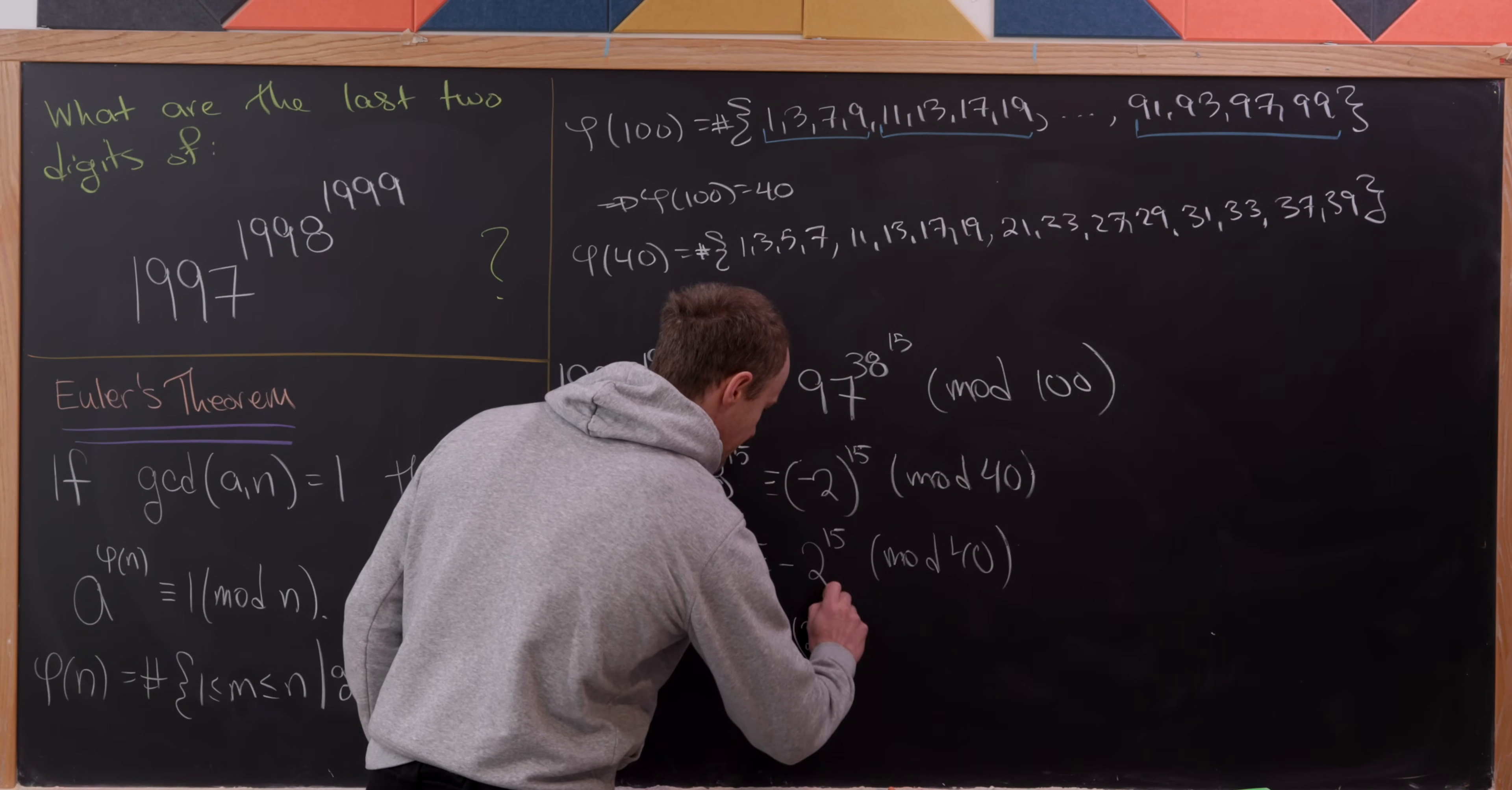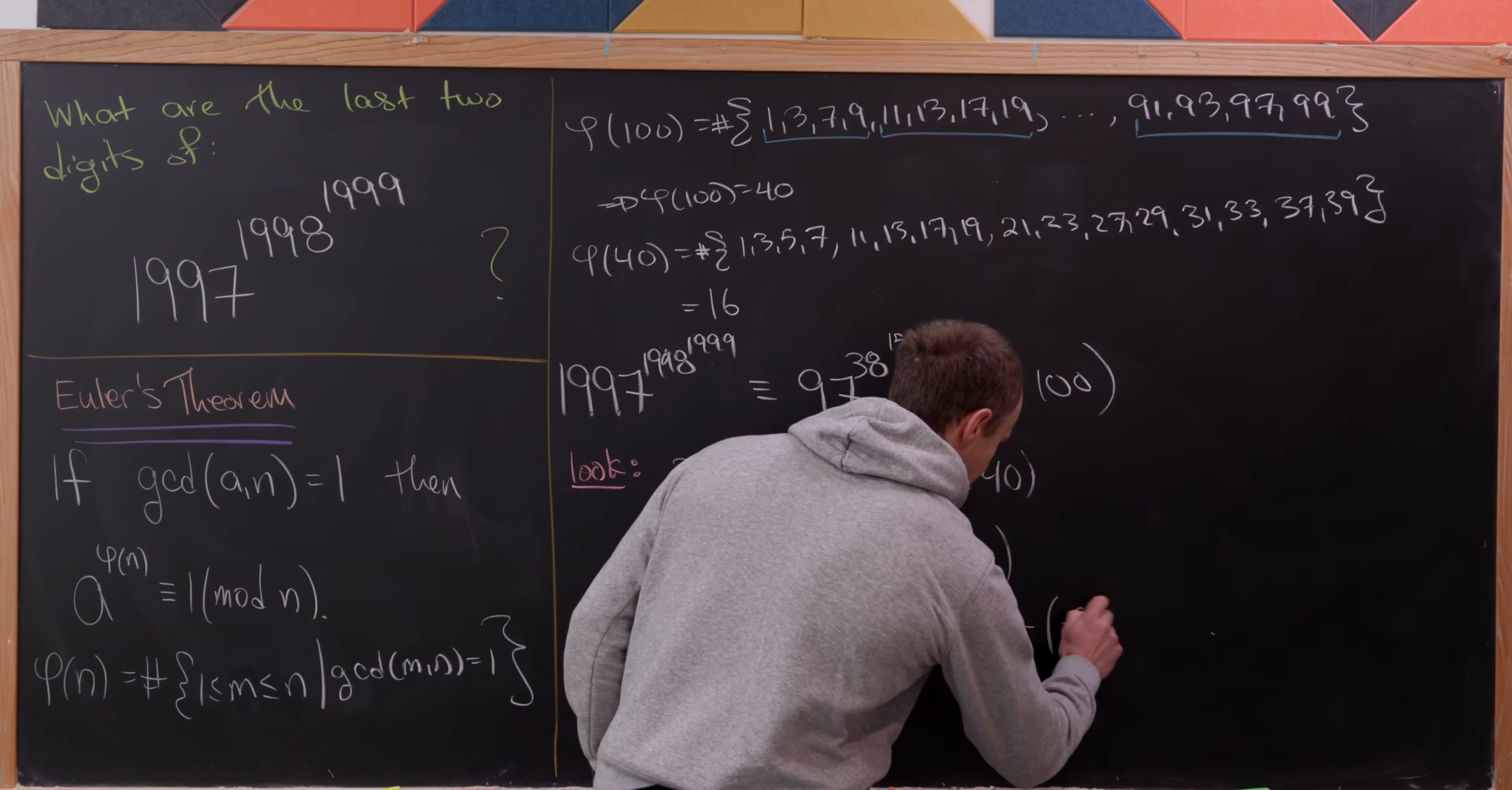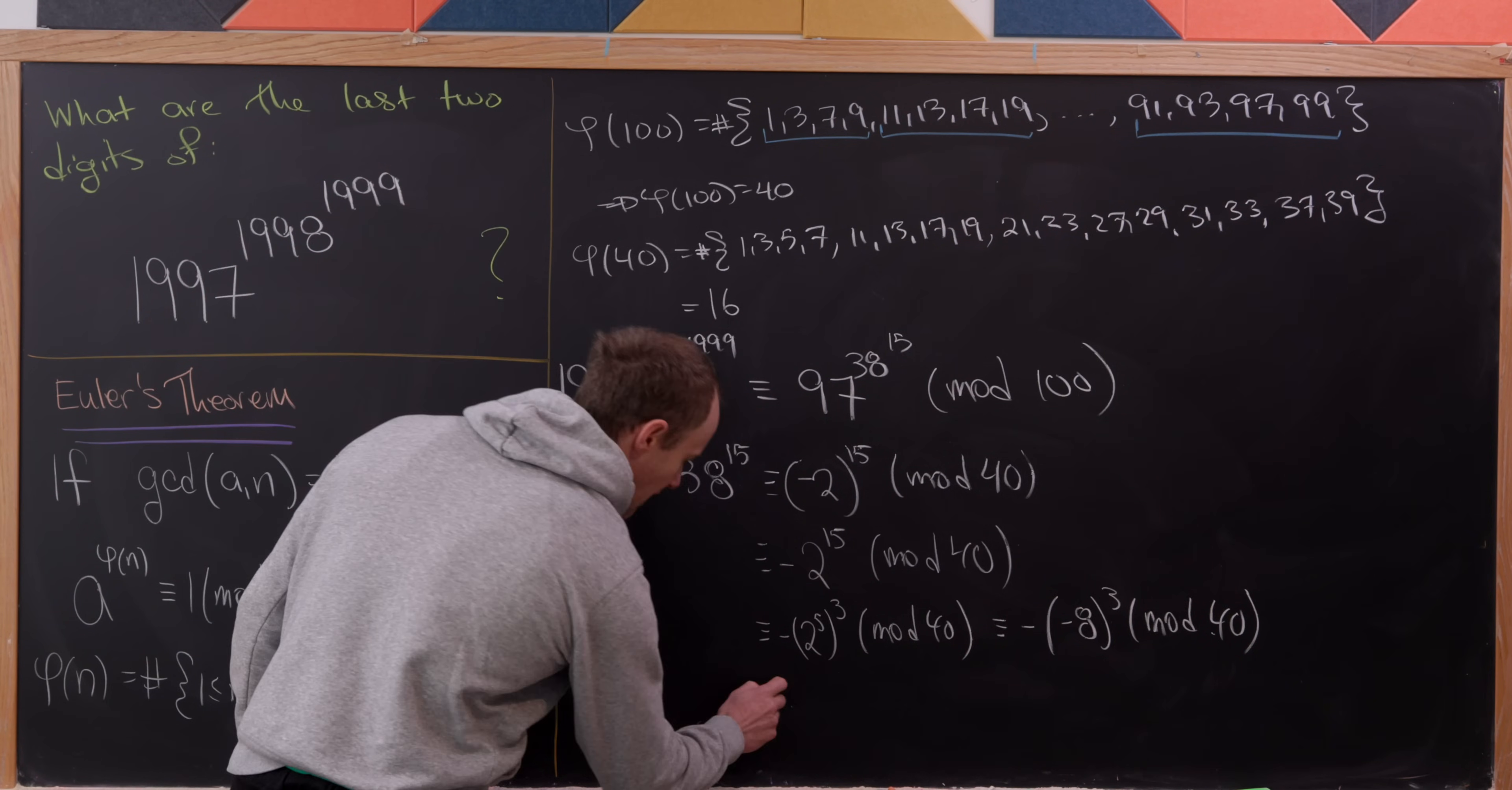But now 2 to the 15 equals 2 to the 5 to the third power mod 40. Why did I do 2 to the 5? That's going to get me to 32, and 32 is 8 less than 40, so I can write it as negative 8. This is negative, negative 8 cubed modulo 40. But now that negative sign inside the cube can be brought out and cancel the minus sign we already have, leaving us with 8 cubed mod 40.